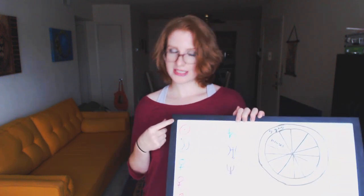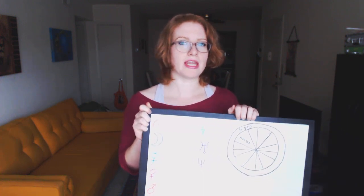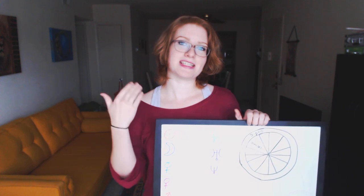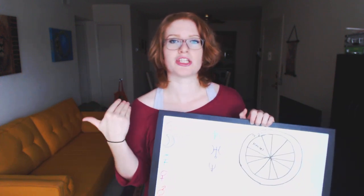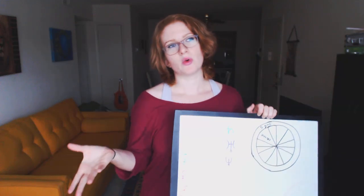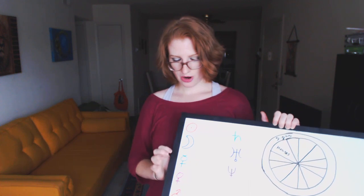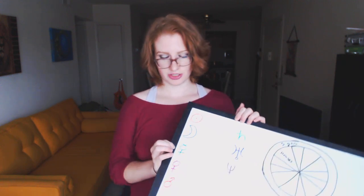If your composite sun sign is in Gemini, then the relationship is going to be more about the exchange of information, speaking to each other, sharing experiences, sharing knowledge, sharing wisdom — whatever you accumulate throughout the day. But if you want to know how talkative you are and how you actually communicate with one another, you're also going to have to look at where Mercury is in the composite chart.